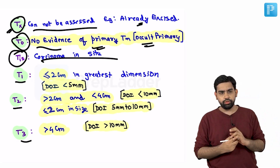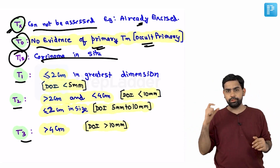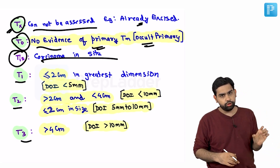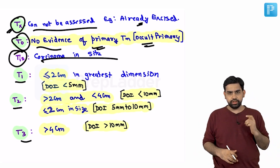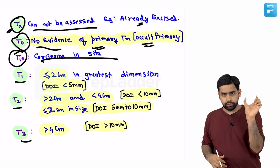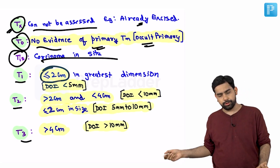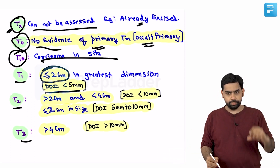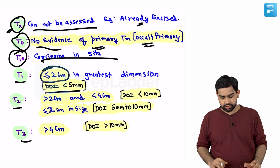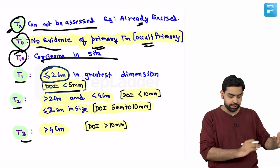TIS is carcinoma in situ. In the 8th AJCC, the depth of invasion has also been included. For T1, the tumour needs to be less than two centimetres in the greatest dimension, and the depth of invasion should be less than five millimetres. Both conditions must be met to call it T1.